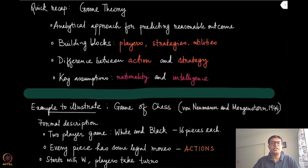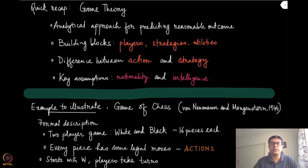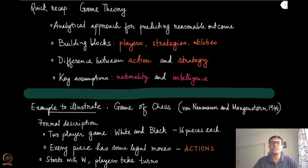Hello everyone. In the last two modules, we have given an introduction to game theory and mechanism design. From this lecture onwards, we will essentially try to look at the game theory part in detail and develop some of the definitions that we have done earlier, a little informally, and make those things more formal. Game theory is an analytical approach for predicting reasonable outcomes in a game, which is a strategic interaction between multiple players.